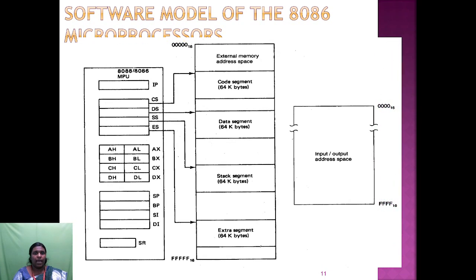The software model of the 8086 microprocessor shows the external memory space divided into four segments: code segment, data segment, stack segment, and extra segment. On the left side, we see the memory space allocated for each of these four segments.